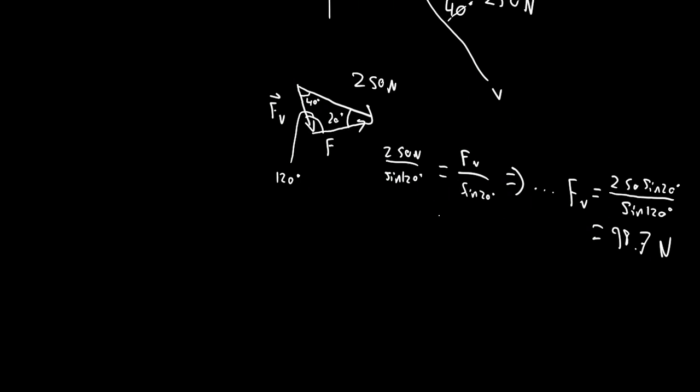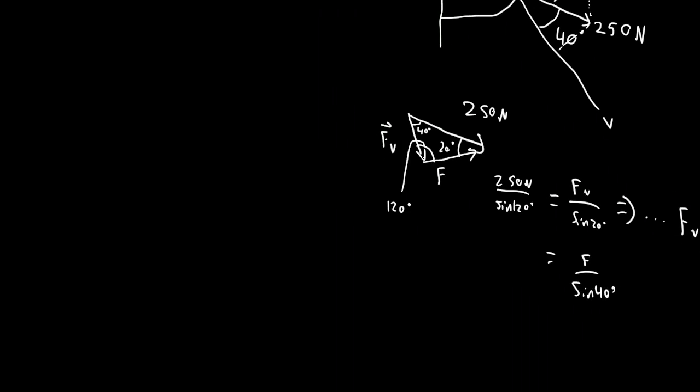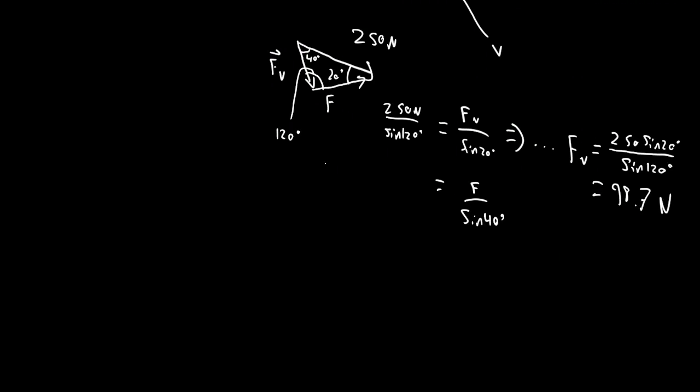Now we can also say through the same argument equals F over sine 40. We have F here, opposite angle is 40 degrees, so then we'll get F equals 250 sine 40 degrees over sine 120 degrees equals 186 Newtons.